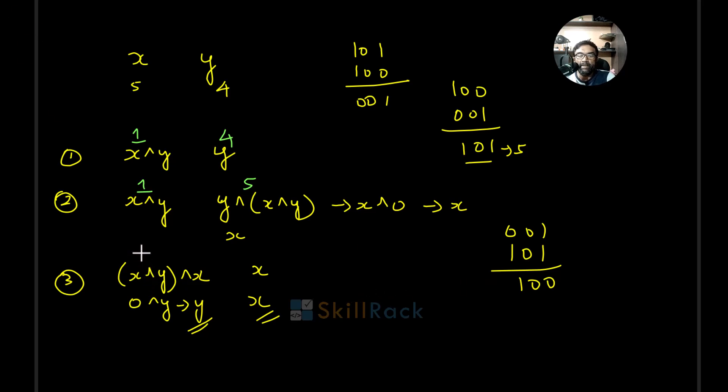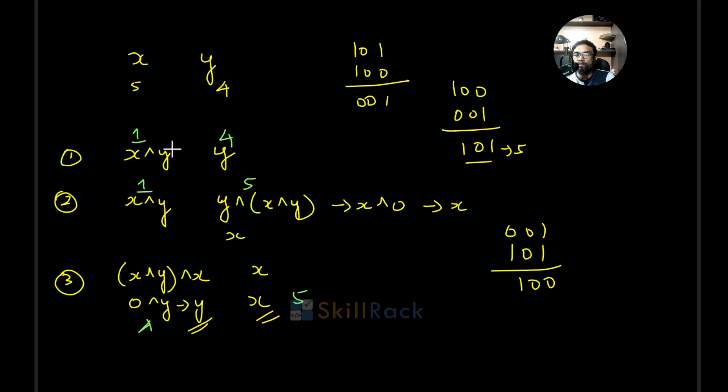Now in place of X, 4 will be there. And in place of Y, the current value 5 is retained. So now you see 5 4 has been swapped to 4 5. This is the logic involved.